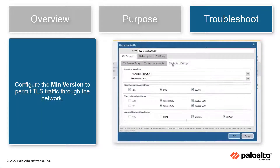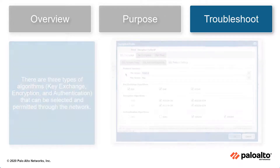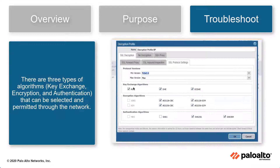Additionally, configure the minimum TLS version to permit TLS traffic through the network. There are three types of algorithms — key exchange, encryption, and authentication — where algorithms can be selected and permitted through the network.